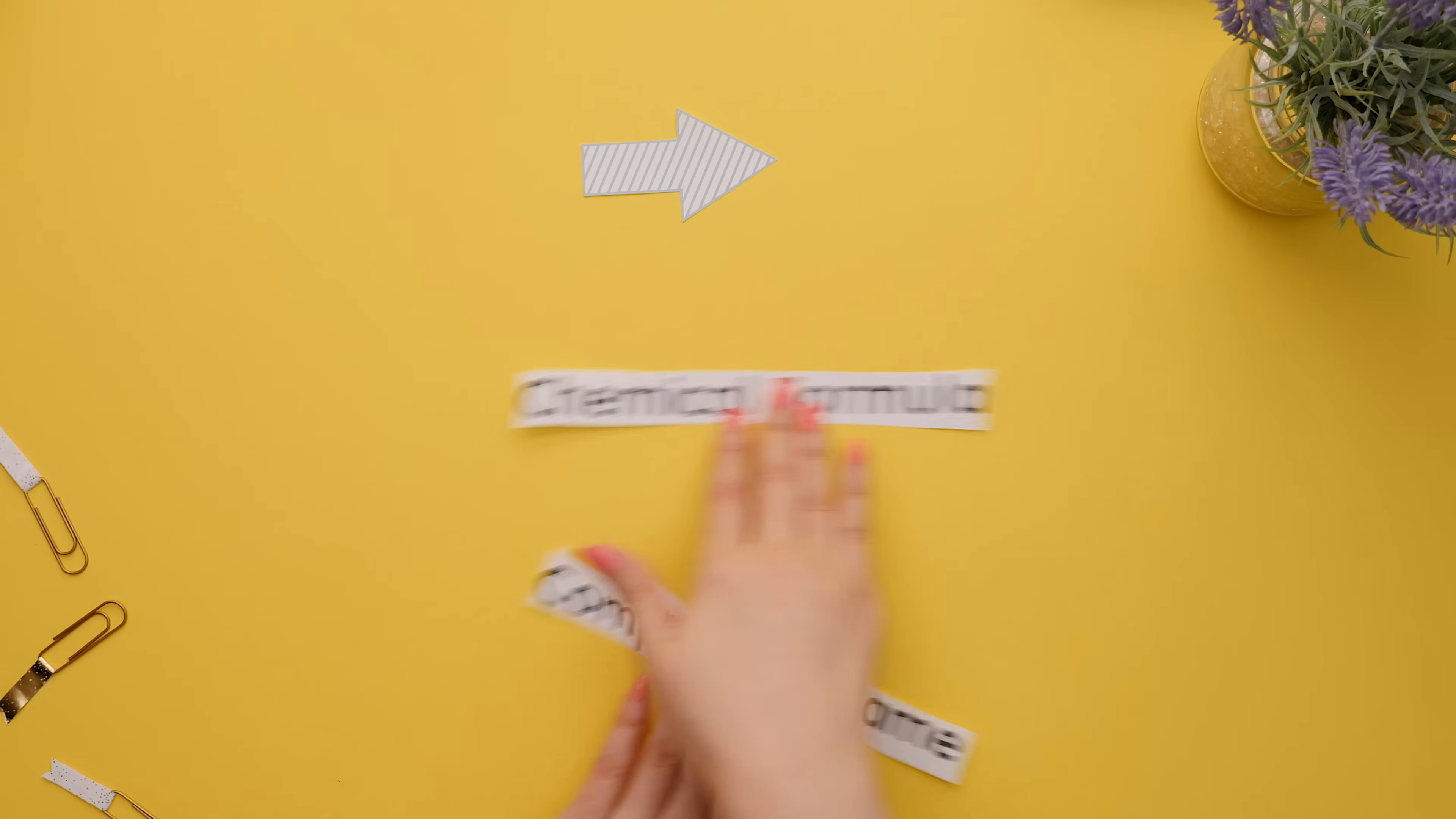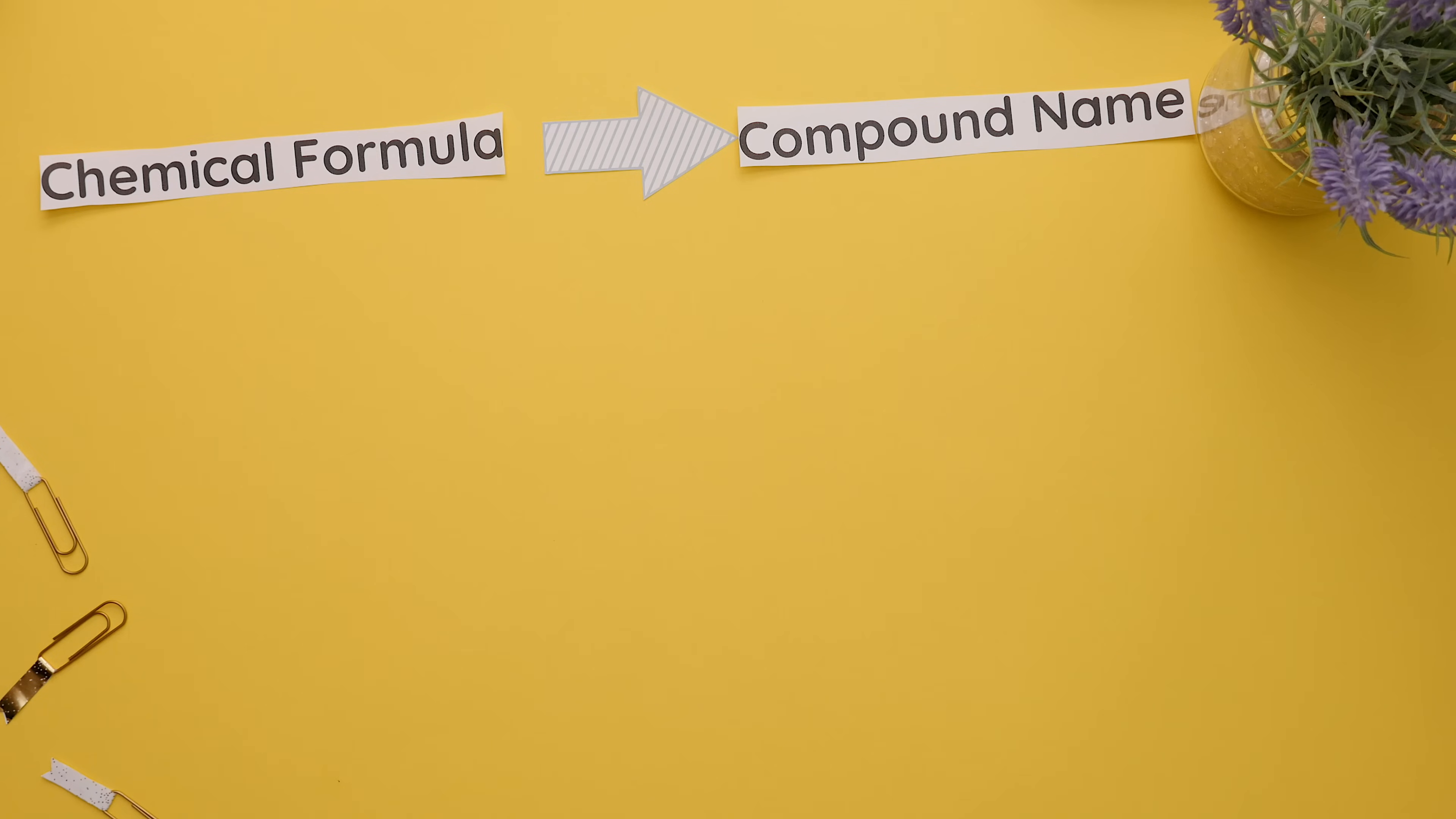Going from the chemical formula to the compound name, we will identify the name of the metal and the name of the polyatomic ion. This is lithium and this is acetate. The compound name is then lithium acetate.